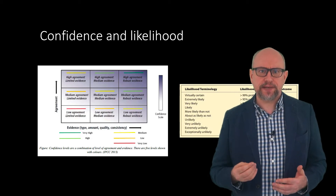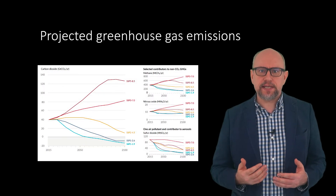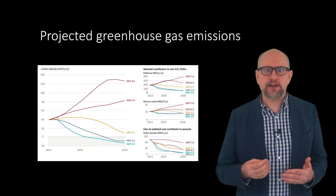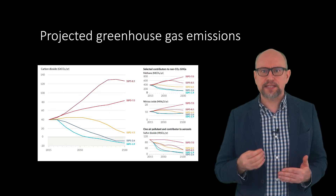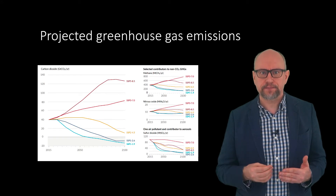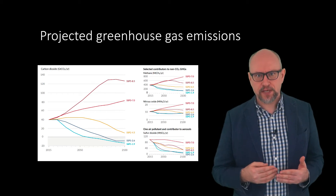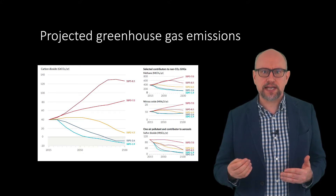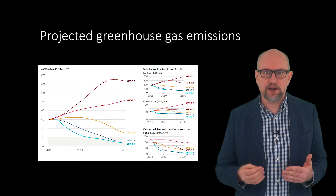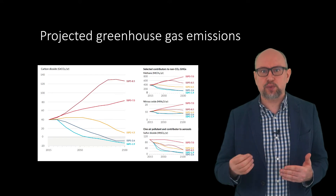Back to the projections then. The IPCC, in their sixth assessment report, focused on five illustrative scenarios: SSP5 8.5, SSP3 7.0, SSP2 4.5, SSP1 2.6, and SSP1 1.9. The simulations begin to be forced by these scenarios in 2015. The scenarios with high and very high greenhouse gas emissions, that is SSP3 7.0 and SSP5 8.5, have CO2 emissions that roughly double from current levels by 2100 and 2050 respectively.